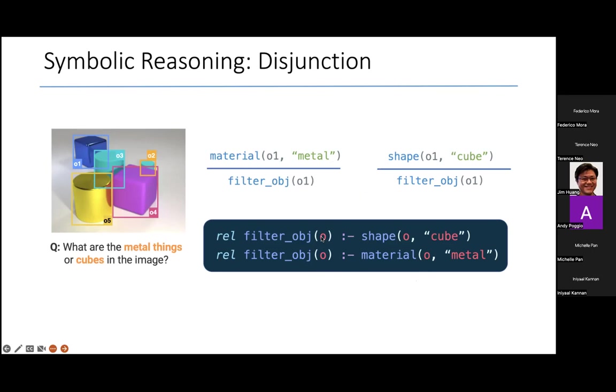So I filter an object O either if its shape is a cube or its material is a metal. And when you evaluate this program on the relational representation corresponding to this example, then I've shown a derivation which gives you the proof why object O1 was filtered.